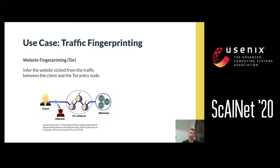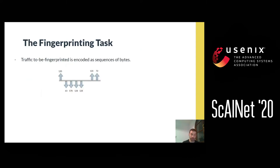The second and most popular type of traffic fingerprinting is website fingerprinting, often seen in papers regarding TOR. In that case, the adversary doesn't know which website the victim is visiting. The adversary stands in between the client and the entry node of the TOR network, trying to infer which website the victim is visiting. The adversary captures traffic and converts it into a sequence of bytes denoting the length and direction of packets sent or received.